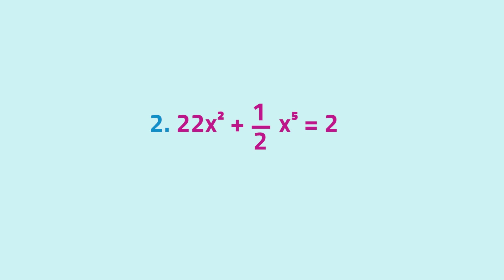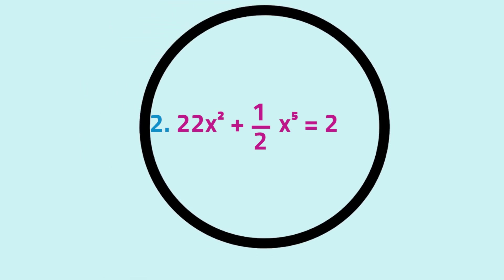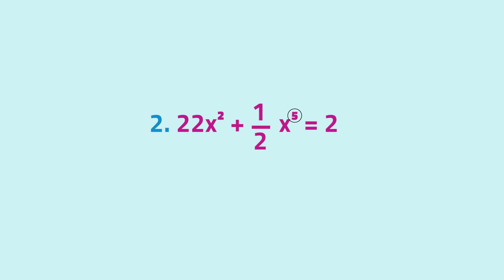Moving on to our second equation, we see that one variable has the exponent 5. Now 5 is greater than 2. This automatically makes it not a quadratic equation.